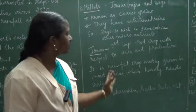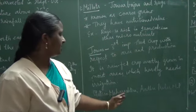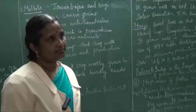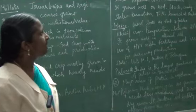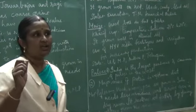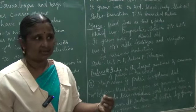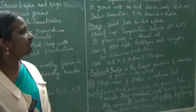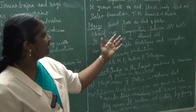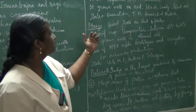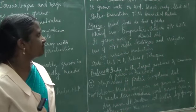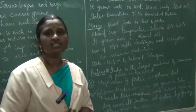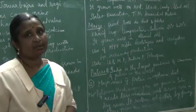States that produce Jowar include Maharashtra, Andhra Pradesh, and Madhya Pradesh. The second type of millet is Bajra. Bajra grows well on sandy soils and shallow black soil. States which produce Bajra are Rajasthan, Uttar Pradesh, and Madhya Pradesh. It also grows on red, black, and sandy soils in Karnataka, Tamil Nadu, and Andhra Pradesh. Although black soil is typically suited for cotton, Bajra can also be grown in those areas.